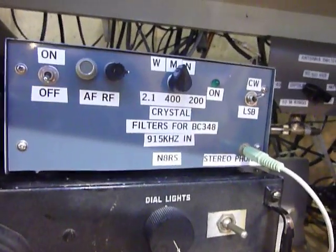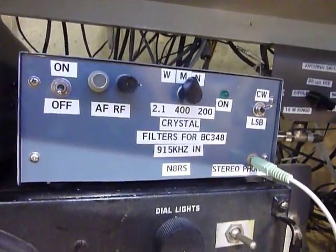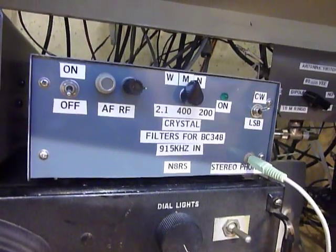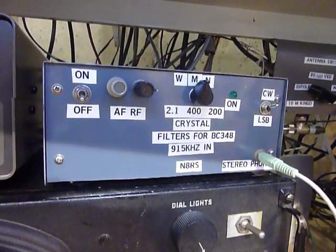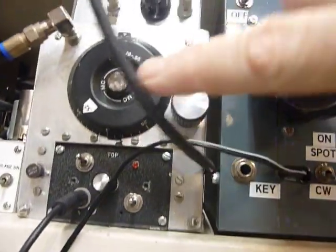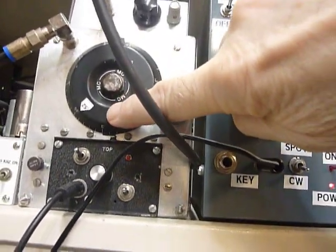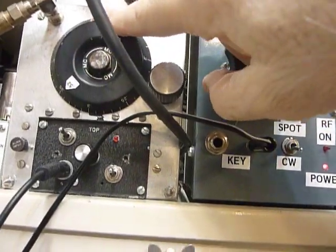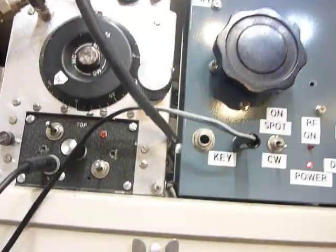When I built this thing, I had reservations about it. I really didn't think it would be much of an improvement over the BC 453 Q fiber which I have up here, which I can tune into the IF of the BC 348.